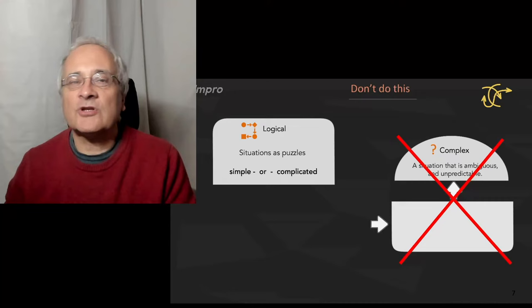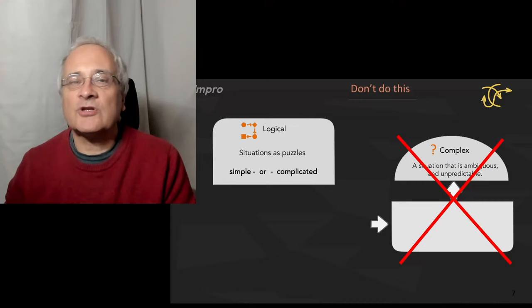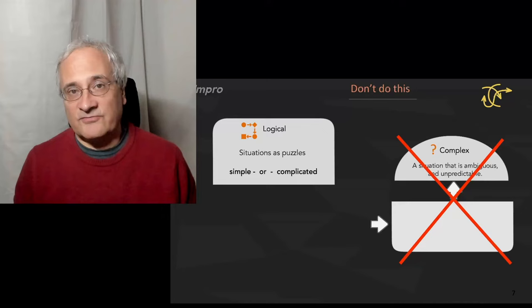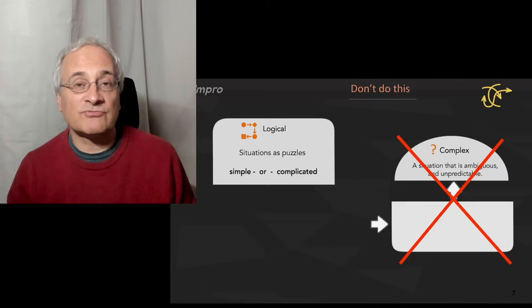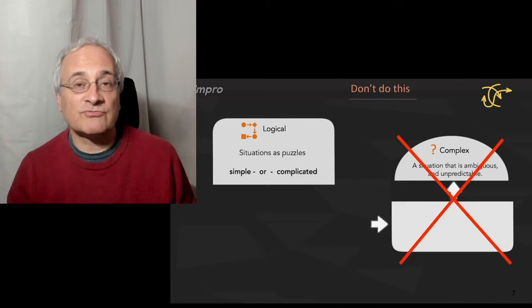The reason that we are very familiar with logical approaches, but less familiar with complex ones, is down to someone called Frederick Taylor. Over 100 years ago, he developed a way of understanding how organizations work and how to manage them. And he called that scientific management. And that came from all the success of the Industrial Revolution.